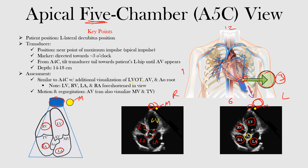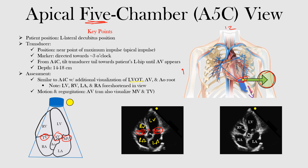The three valves you can see in this view are the ones between the atrium and the ventricle — the AV valves — as well as the aortic valve. We have the mitral valve between the left ventricle and left atrium, and the tricuspid valve between the right atrium and right ventricle. The aortic valve sits right in between as the left ventricle goes out to the aorta.